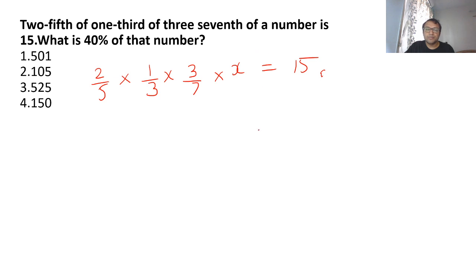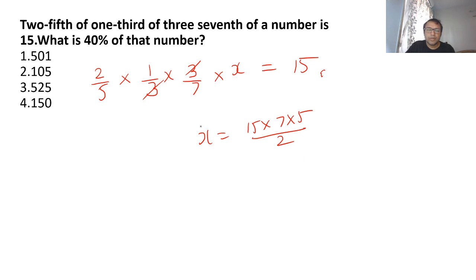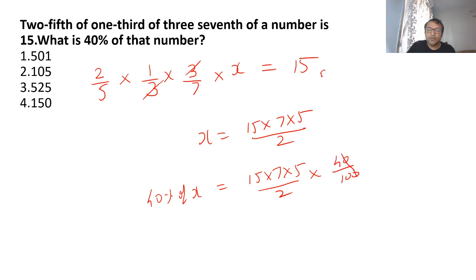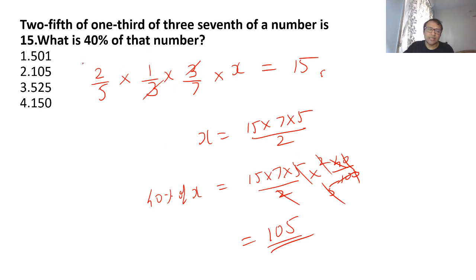We want to find 40% of the number. It's not difficult to solve — if you cancel the 3s, you get x = 15 × 7 × 5 / 2. Now if you want 40% of the number, multiply by 40/100, which is 2/5. The 5s cancel and the 2s cancel, and you will realize the answer is 105.